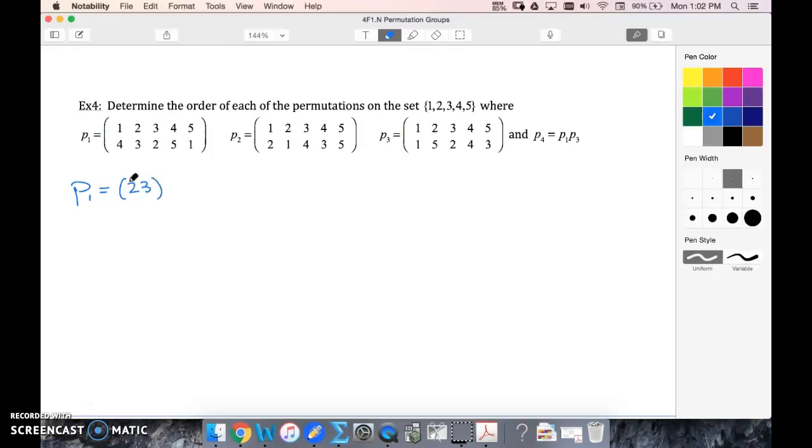Definitely we've got (2,3), 1 to 4, 4 to 5, 5 to 1. So (1, 4, 5) is the second cycle. All right, the least common multiple of 2 and 3, because we've got a cycle length of 2 and a cycle length of 3, is 6. So that must mean the order of p1 is 6.